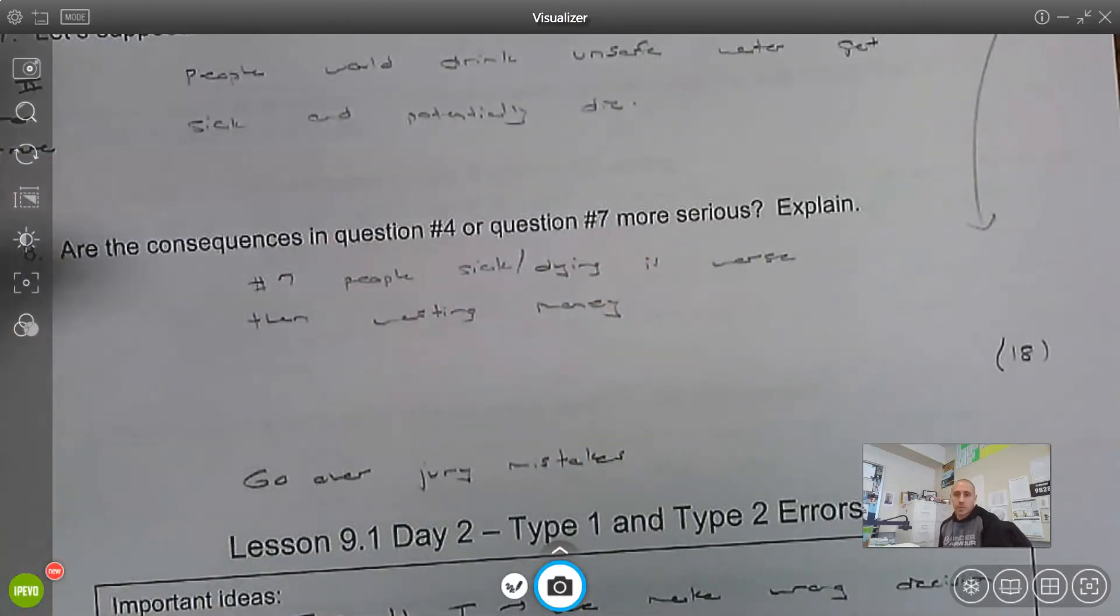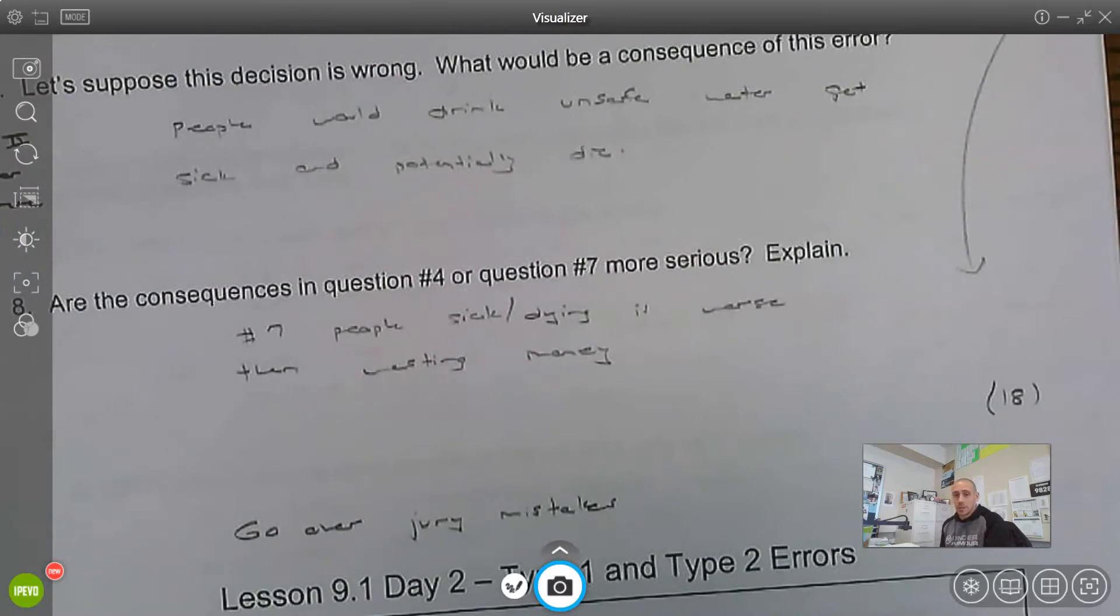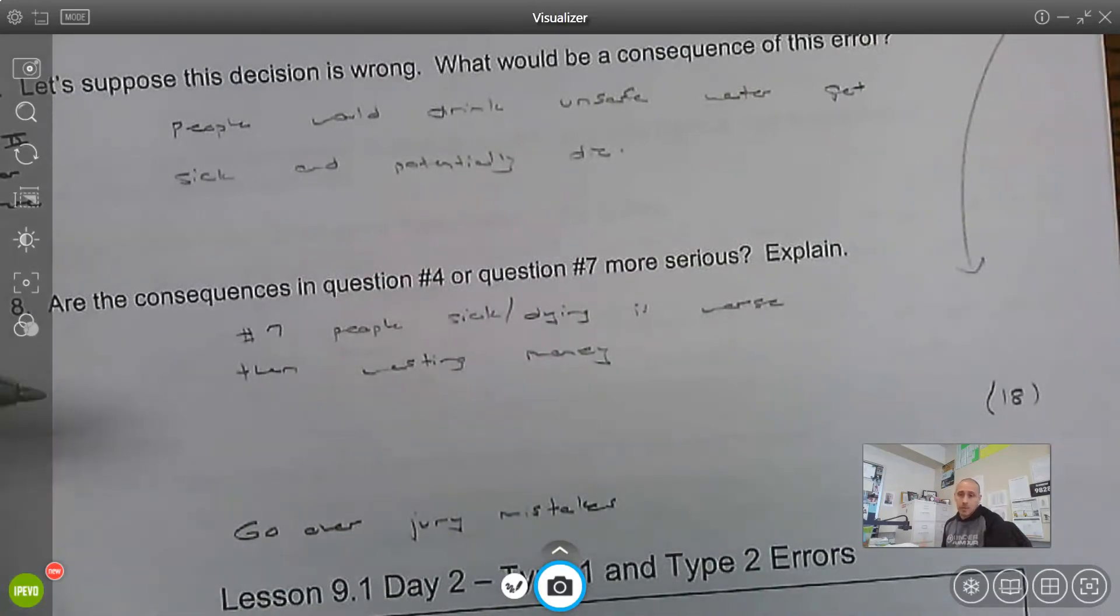So I put in here a little note, go over the jury mistakes. So going back to the court of law idea, they may convict someone who is innocent, or they might let somebody go who is guilty. These are the Type 1 and Type 2 errors that we're talking about here.